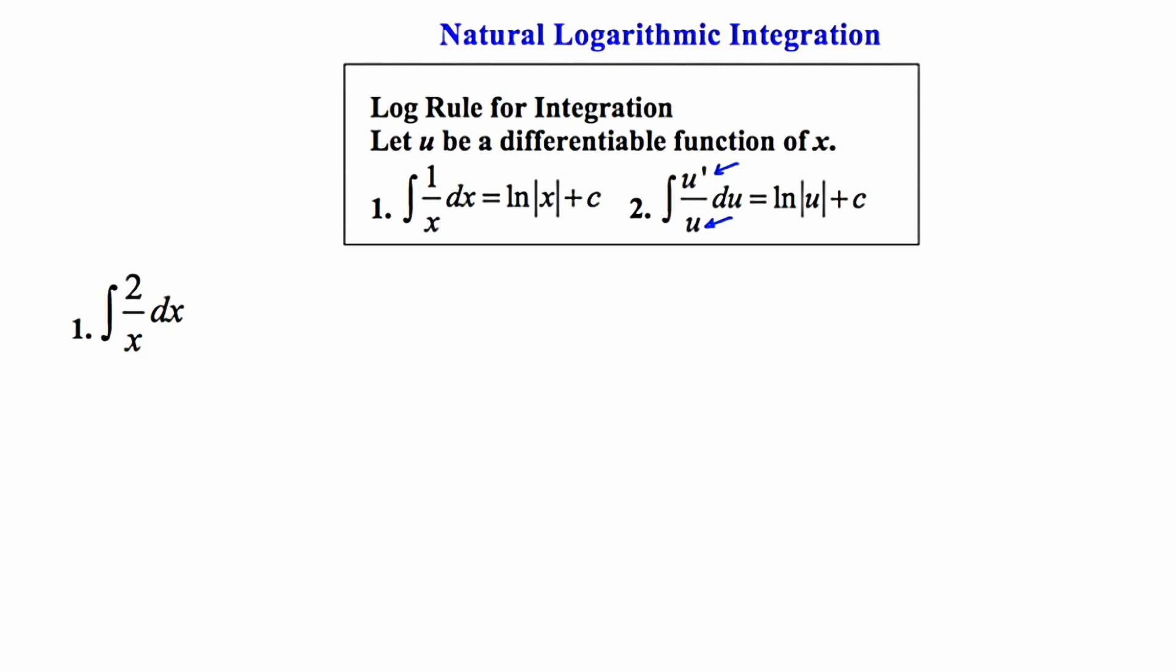Let's take a look at our first example. In our first example, we're asked to integrate 2 over x dx. So 2 is a constant, so I'm going to write that out in front. And when I do that, I'm left with 1 over x dx.